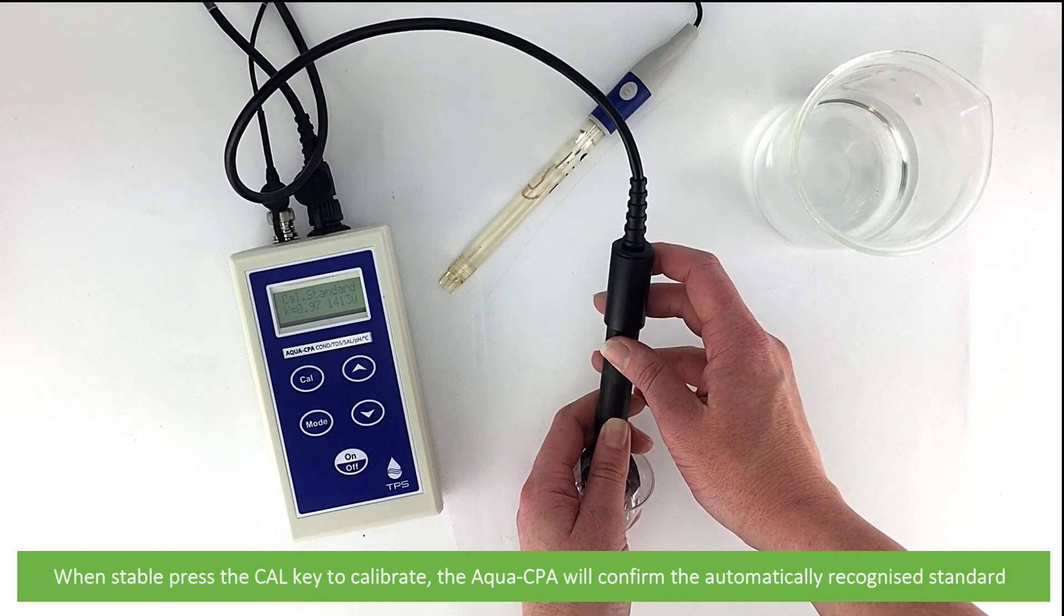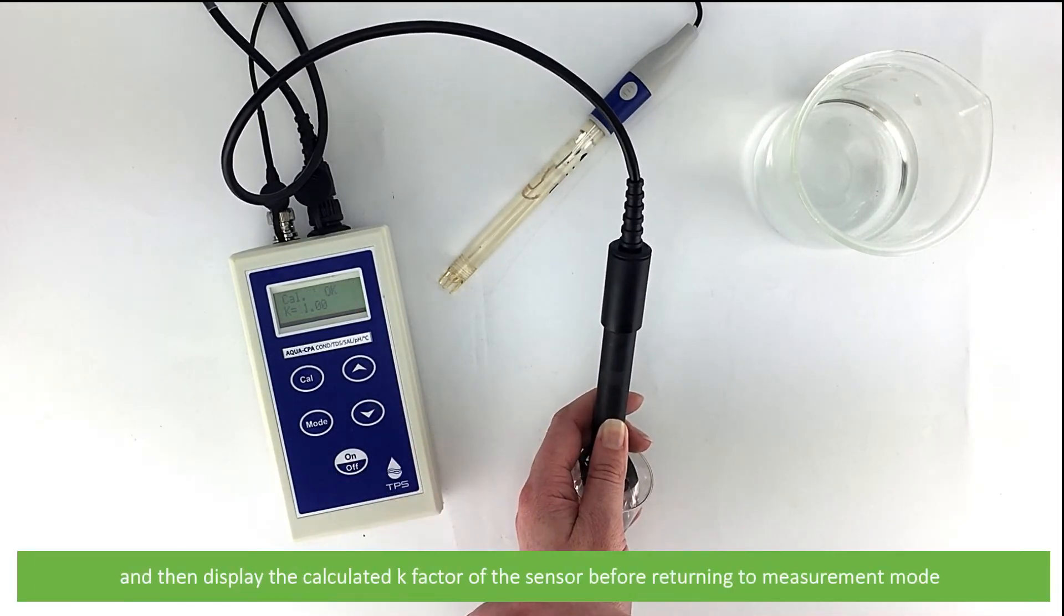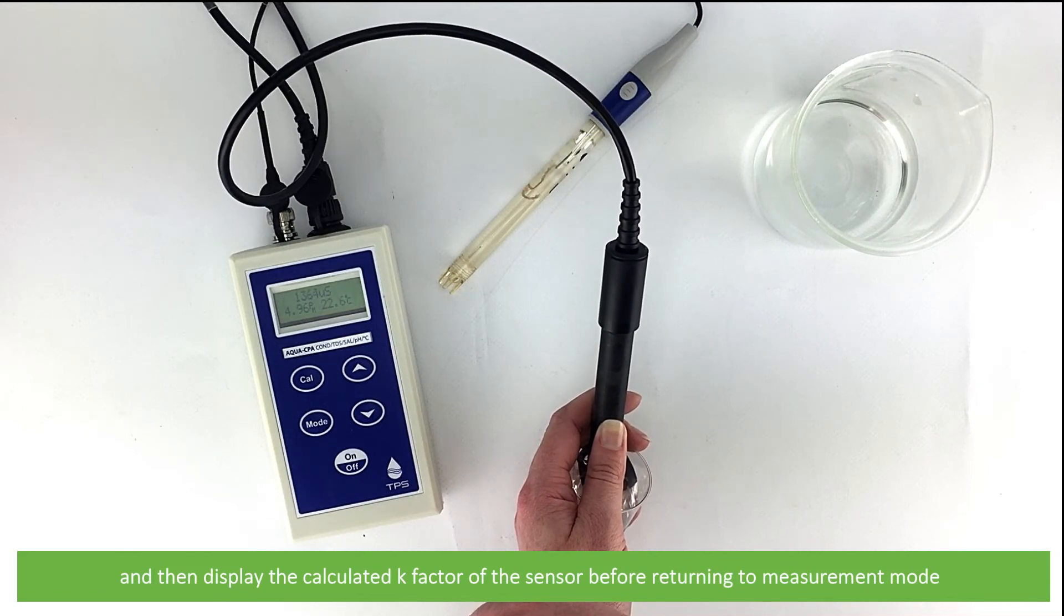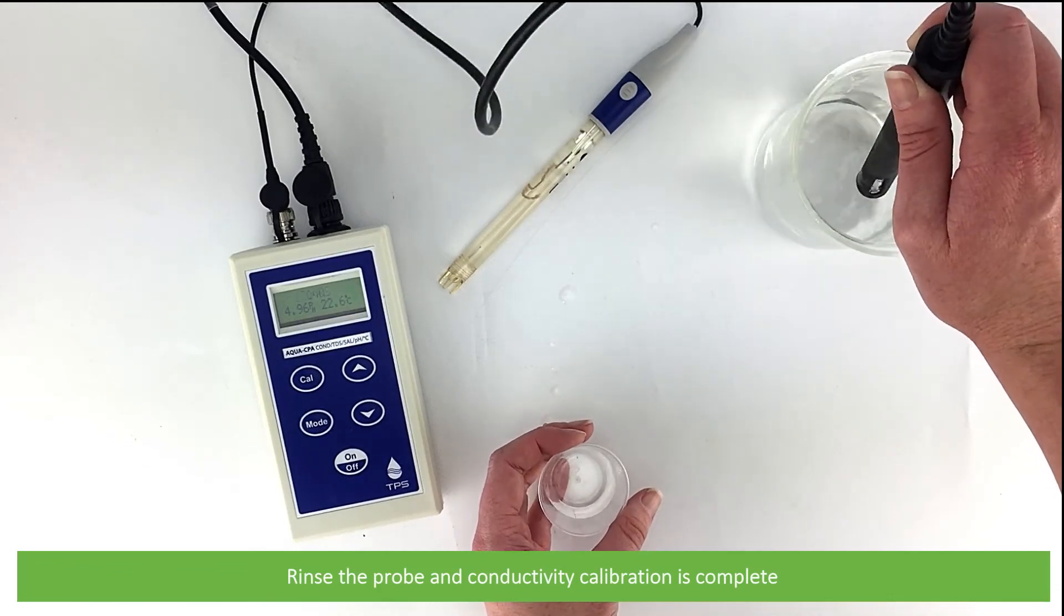The Aqua CPA will confirm the automatically recognized standard and then display the calculated K factor of the sensor before returning to measurement mode. Rinse the probe and conductivity calibration is now complete.